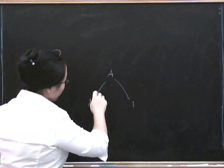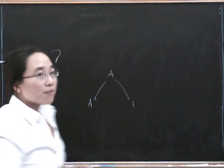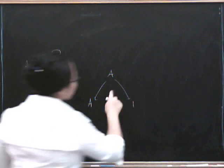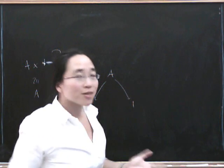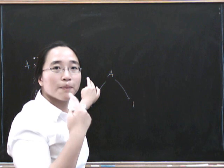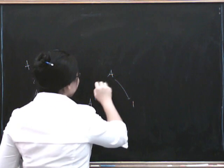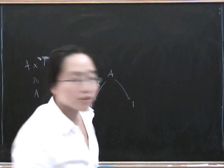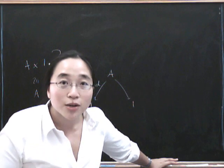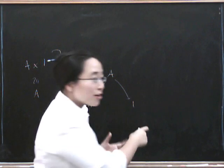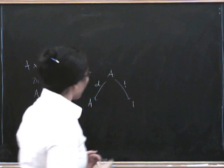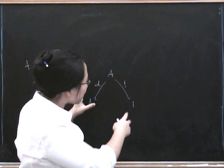The first thing we've got to do is show that we've got projection maps, because remember a product isn't just an object, it's an object equipped with projection maps going down the side. So what could these projection maps possibly be? Can we think of some canonical morphism from A to A? I can think of one. It's the identity. What about a canonical morphism from A to the terminal object? Well I can think of one of those as well. In fact there is only one. The entire point of a terminal object is that there is a unique morphism from every object to it.